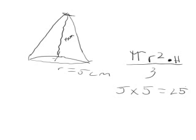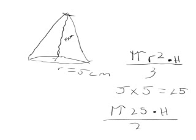So now we replace the r squared with twenty-five in our formula. Now we have π times twenty-five times height divided by three. Our next step is to do π times twenty-five. We know our number for π is 3.14, so we do 3.14 times twenty-five.